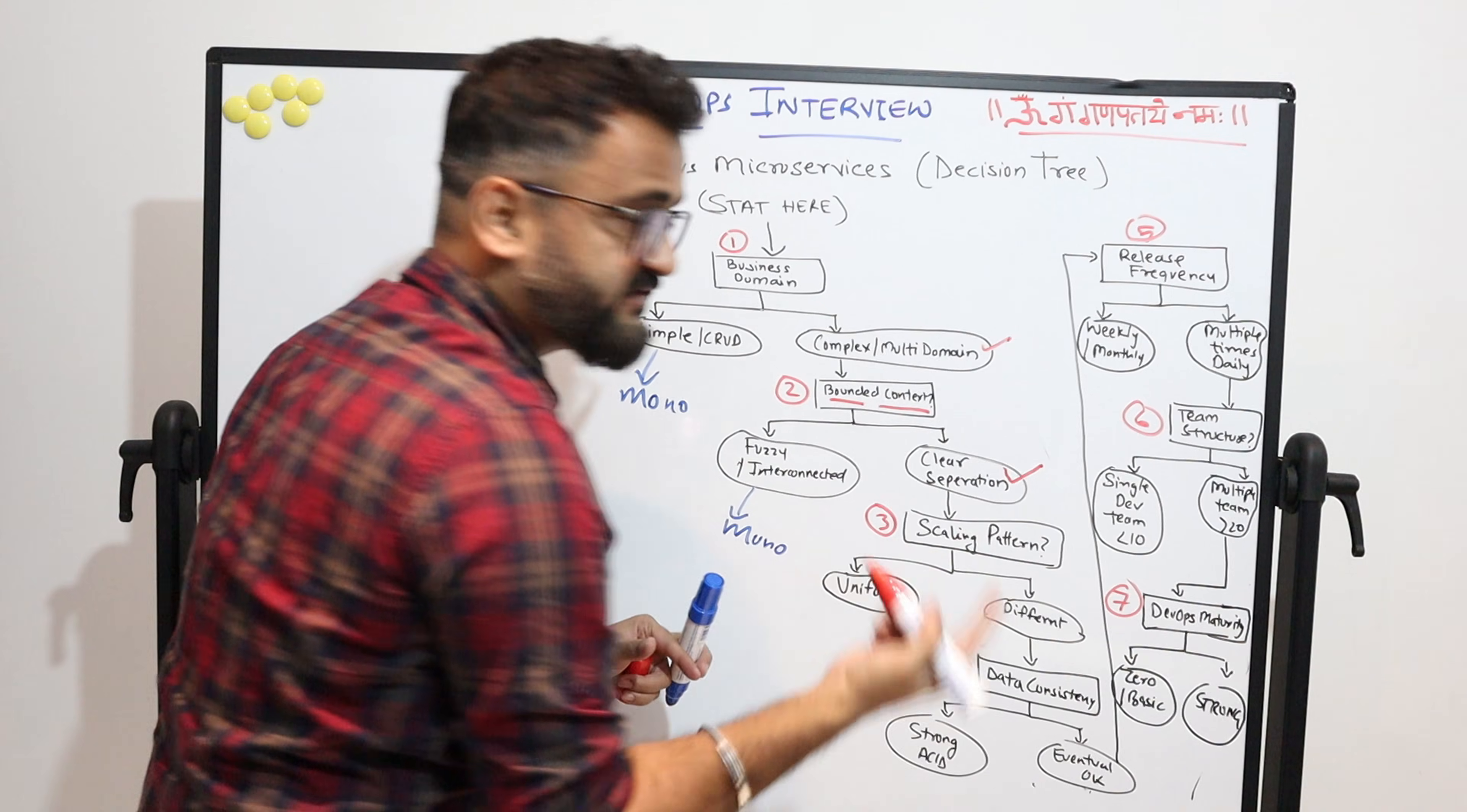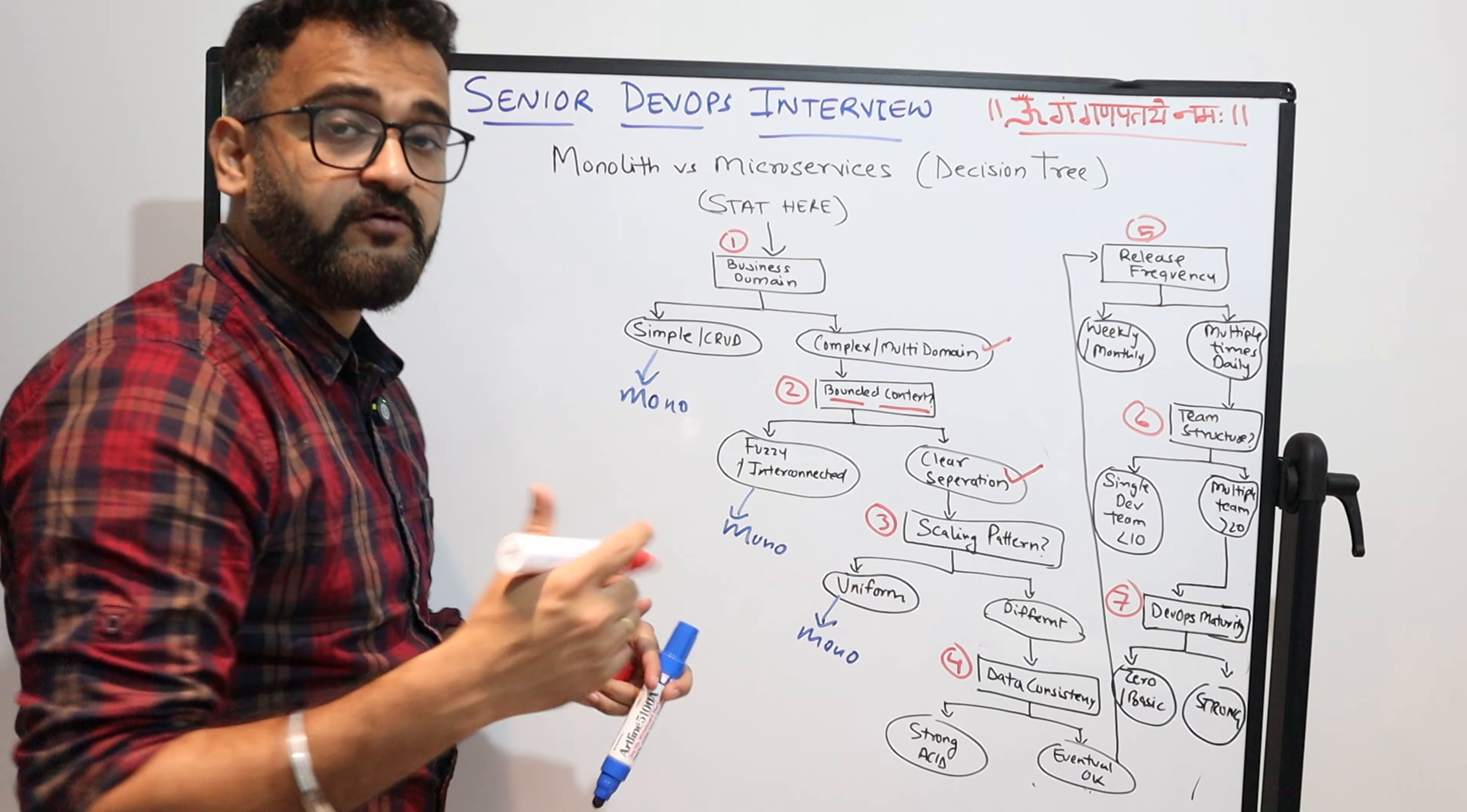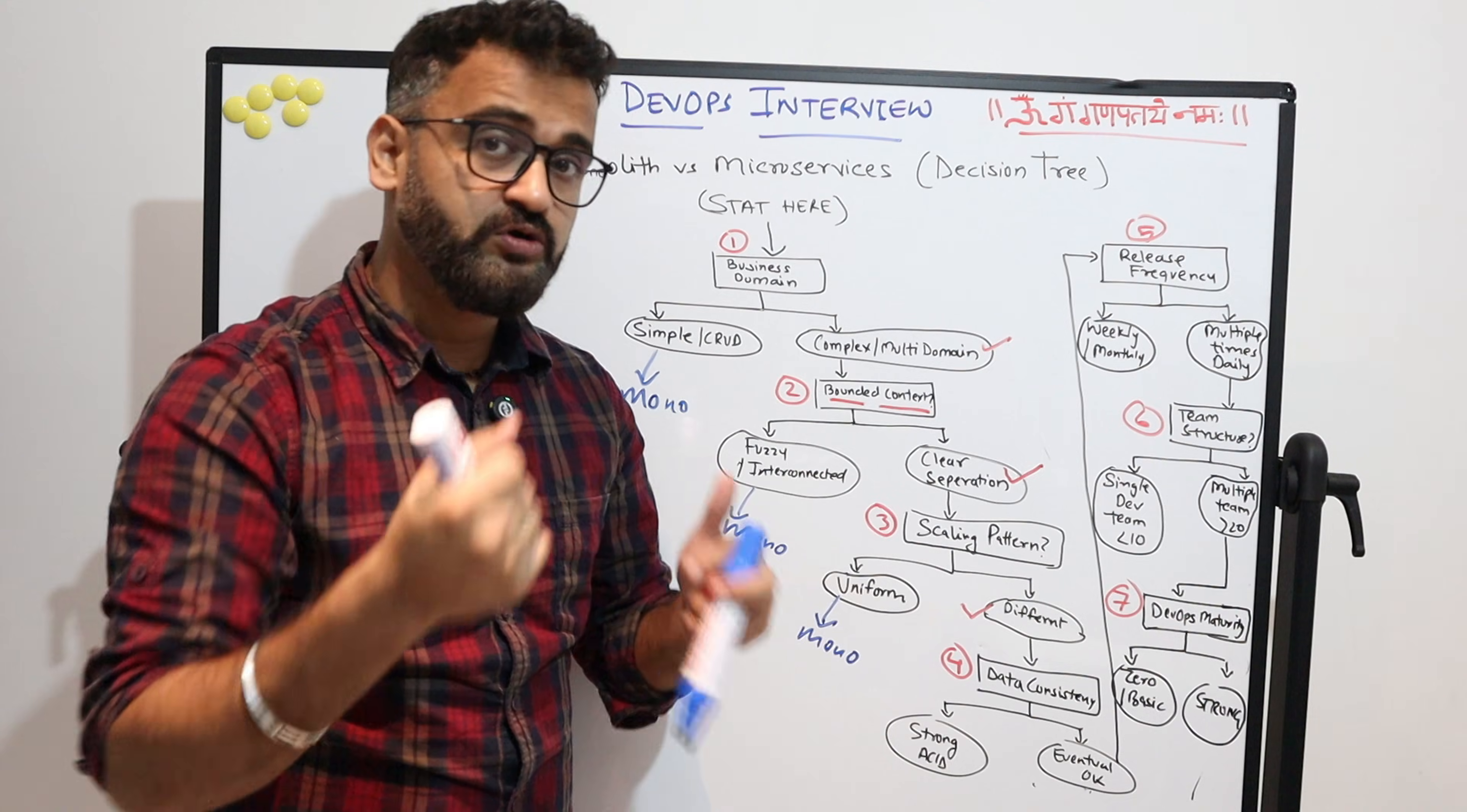Now understanding the scaling pattern—this is a tick so clear separation is a positive sign. Scaling pattern: if it is uniform, it is again no need for microservices because if everything is scaling and the needs are like everything should scale together, then it does not qualify for a microservices design pattern. But if it is different, which most likely will be, then definitely you can go further.